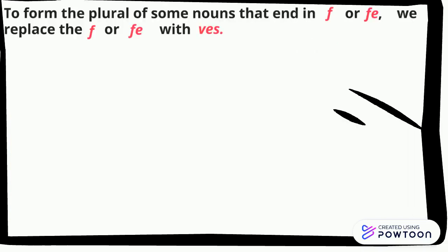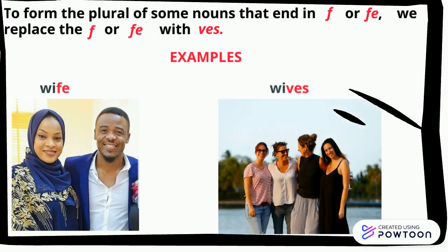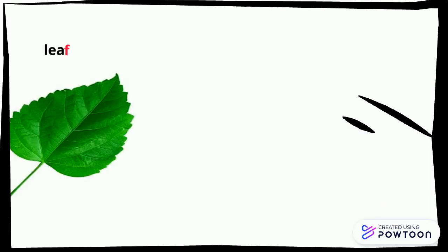To form the plural of some nouns that end in f or fe, we replace the f or fe with ves. Examples: wife becomes wives, life becomes lives.